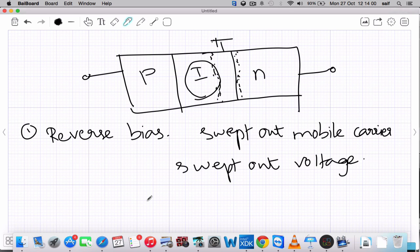That's why we use it in microwave switches. And next, as the reverse bias is further increased, a thin layer of depletion region is formed in the P region. If you further increase the reverse bias...